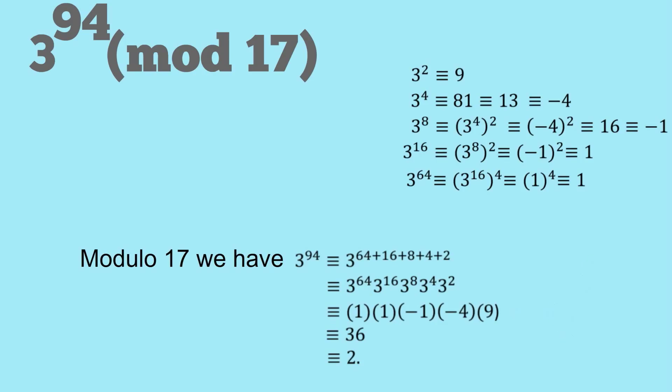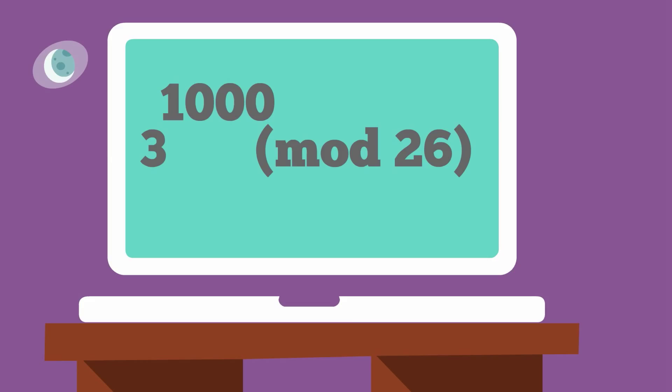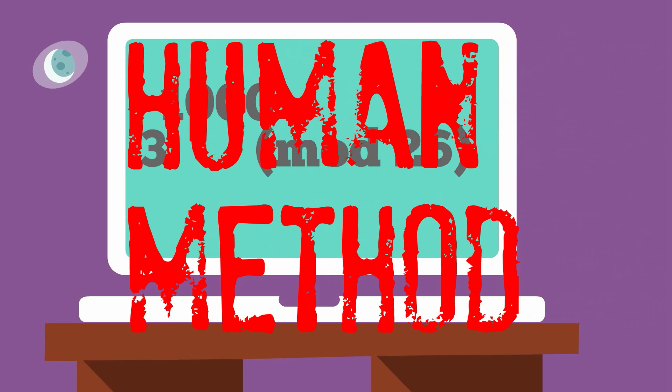Now onto the second problem, 3 to the 1000 modulo 26. And we're going to use what I call the human method. So this is a little bit more casual, a little bit more informal. And it's the one that I use, but sometimes it can not work as well, but let's see how this works.